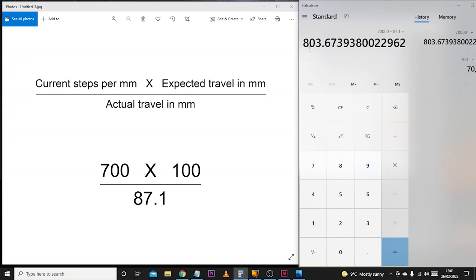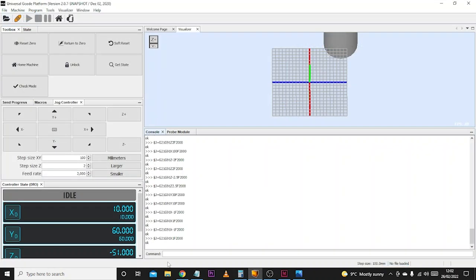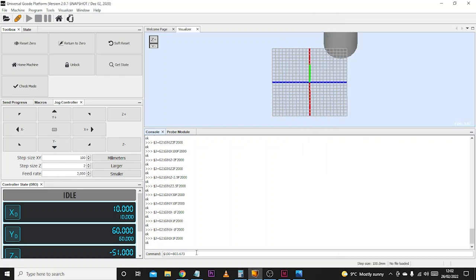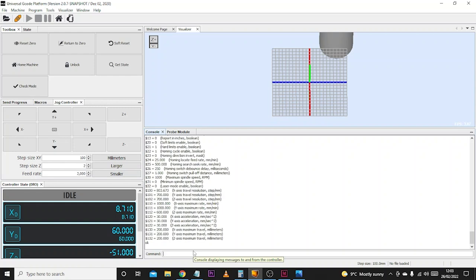As we can see, our original value was 800, so 800 wasn't far off but we were a little bit out. We'll now go back to UGS and input this new number: $100 equals 803.673. We can hit enter and check that measurement has been recorded by typing $$, hitting enter again. Now we can see 803.673.